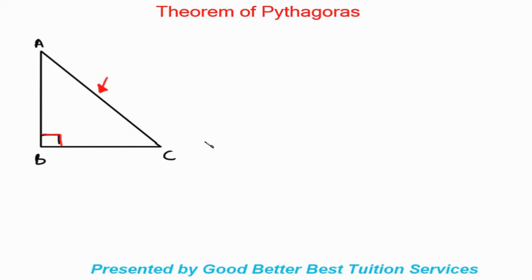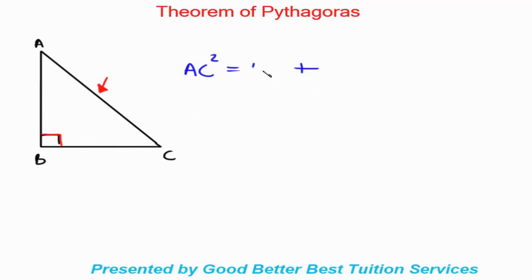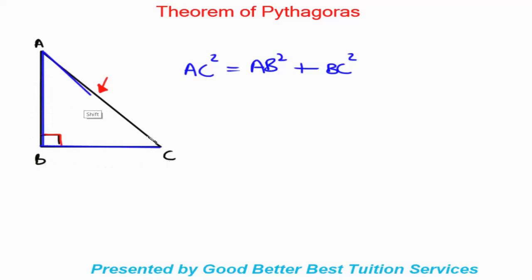The hypotenuse here is the line AC, so AC squared is equal to the sum of the squares of the other two sides. So it's going to be an addition — AB squared plus BC squared. What's happening here is that the square of this side and the square of this side are being added to get the square of the hypotenuse.